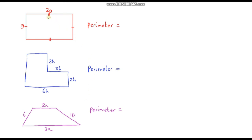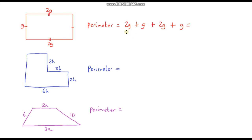For the first shape — a rectangle — the perimeter is 2g plus g plus 2g plus g. In total we have 2 plus 1 plus 2 plus 1, which is 6g. So the answer is 6g.